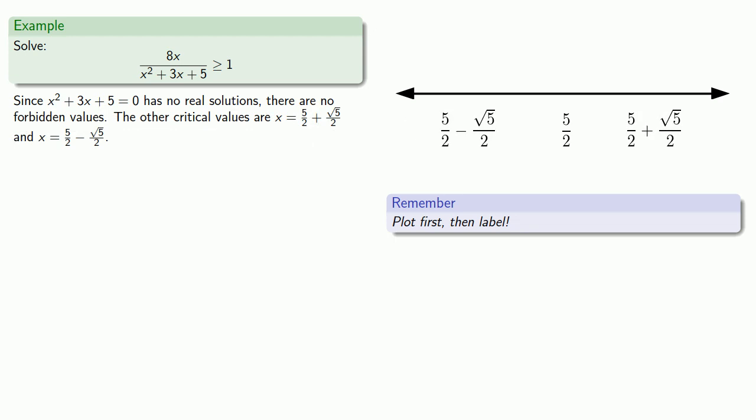And because these critical values solve the equation and our inequality allows for equality, we'll go ahead and represent these using closed circles. And the critical values form 3 intervals on the real number line. So we'll test a point in each interval.